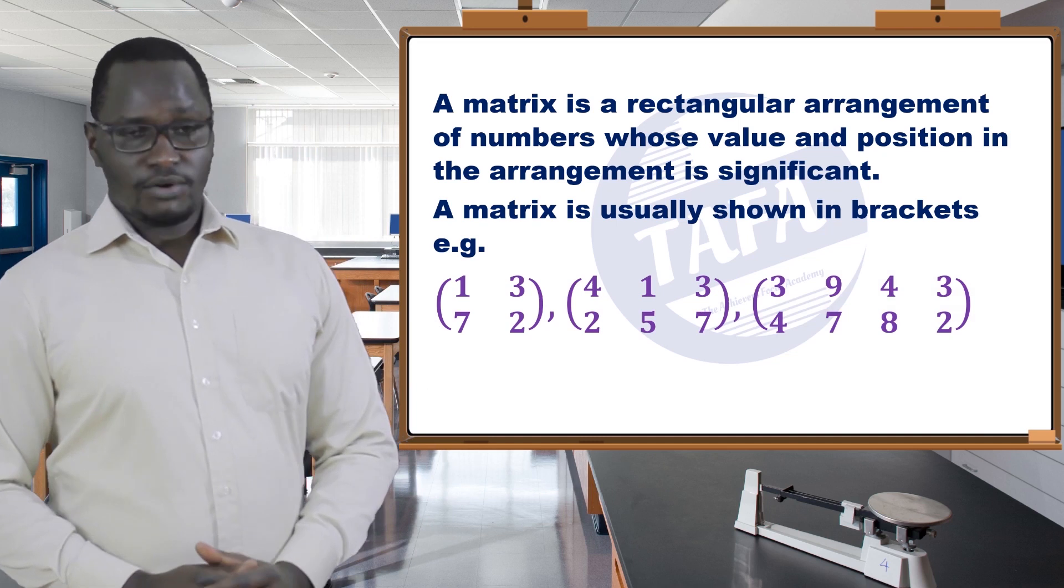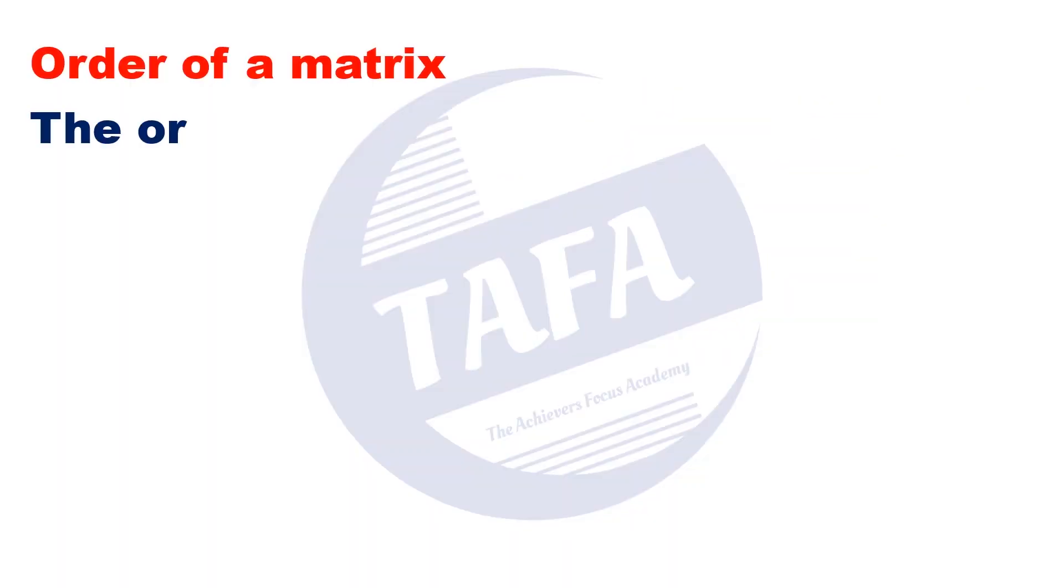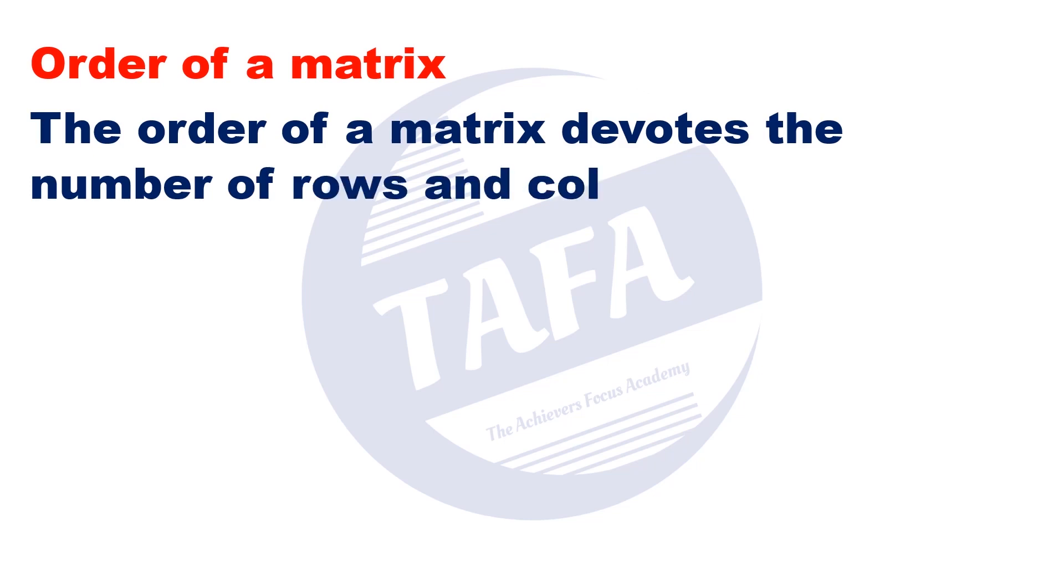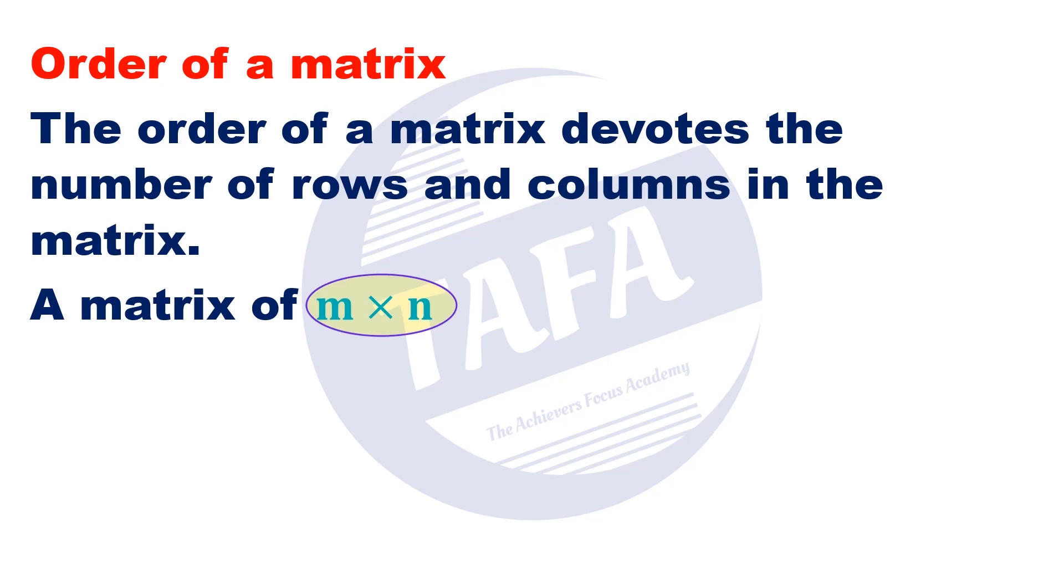The next thing we're looking at is the order of a matrix. The order of a matrix denotes the number of rows and columns in the matrix. A matrix of m times n is read as m by n.